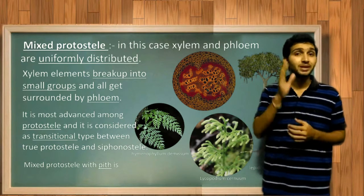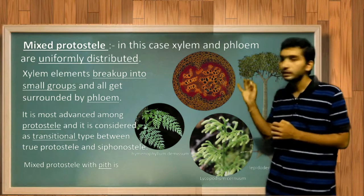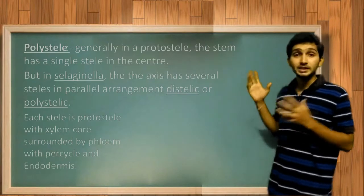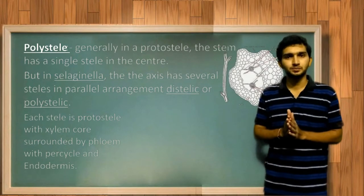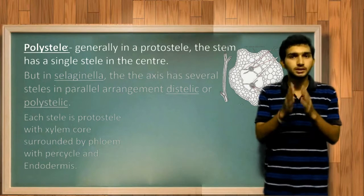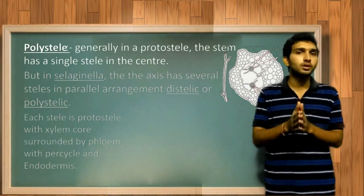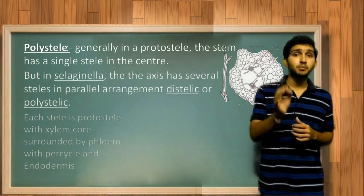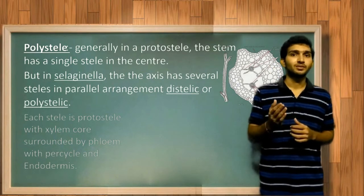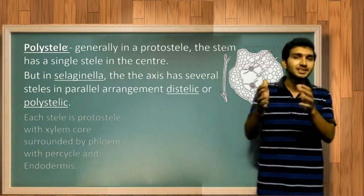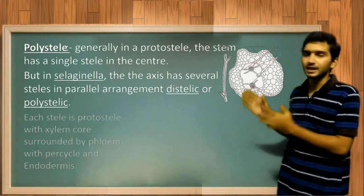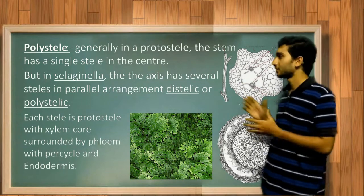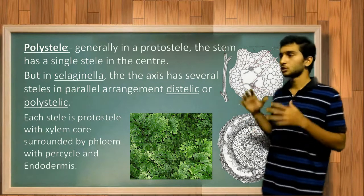One type of differentiation within mixed protostele is the stele having pith within it. Examples for mixed protostele with pith are Hymenophyllum demissum and Lepidodendron selaginoides. Now, polystele: the stem having a single row of xylem and phloem arranged within it, but in Selaginella the stem axis contains more than one stele. There are many steles arranged showing protostele nature, and the best example is Selaginella.